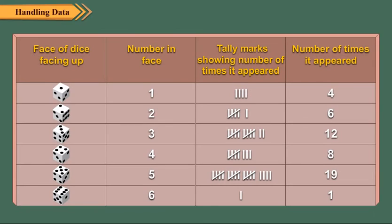Children, when you play Snakes and Ladders, you can make a table which shows how many times each number appeared facing up. One of such types of tables is shown here.